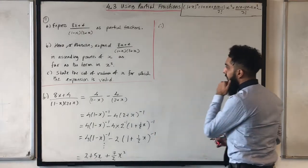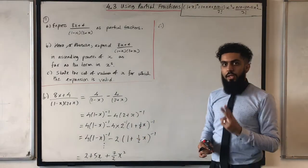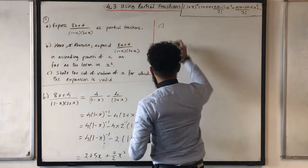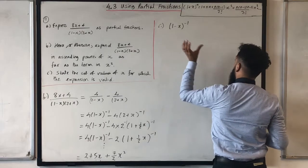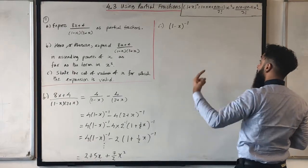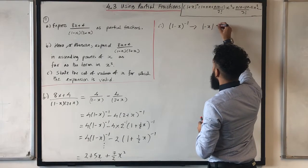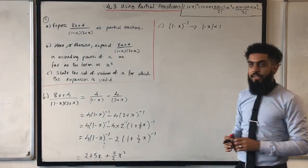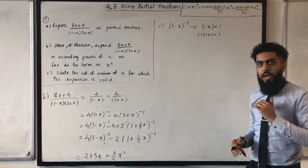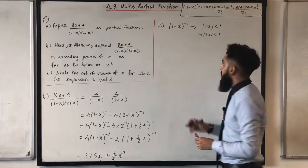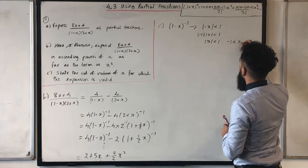Part C asks us to state the set of values of x for which the expansion is valid. I expanded two binomials. The first was (1 minus x) to the power minus 1, which is valid when the modulus of minus x is less than 1. Since mod(minus x) equals mod(minus 1) times mod(x) equals mod(x), this gives mod(x) less than 1, or equivalently minus 1 less than x less than 1.